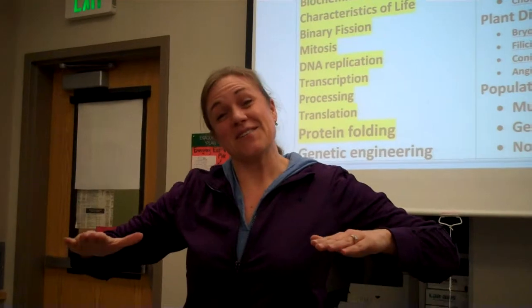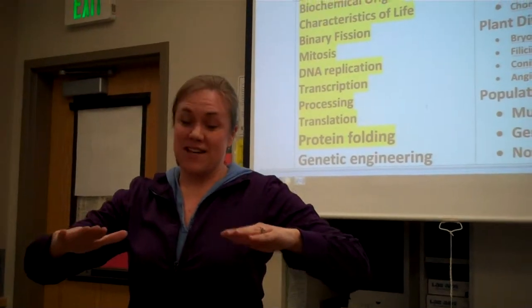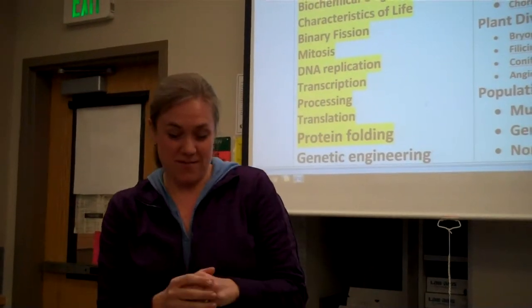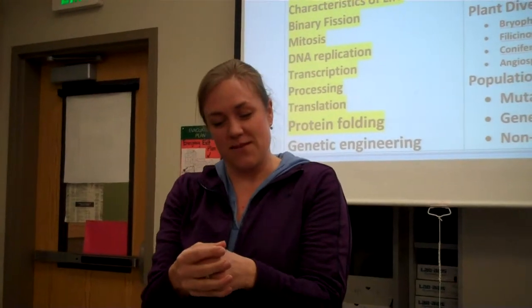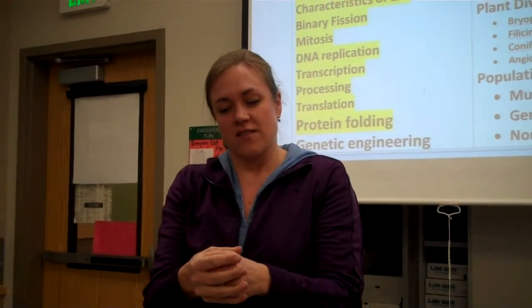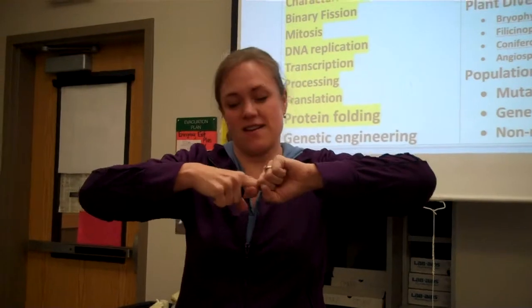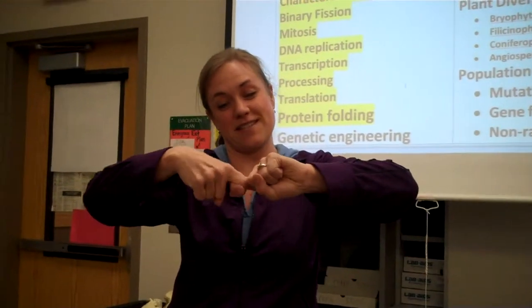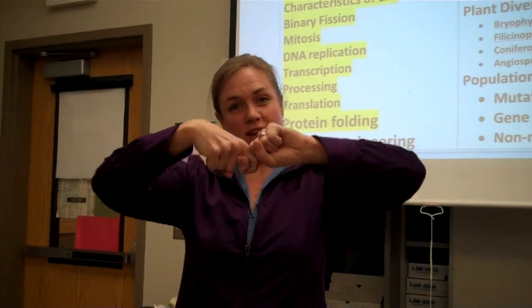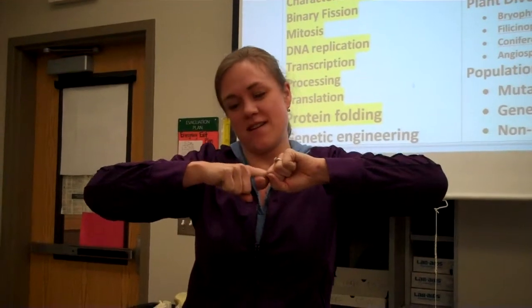Then you get into tertiary structure, which has four types of interactions amongst R groups of the amino acid. The strongest is a covalent bond between disulfide, called a disulfide bridge, between the cysteine amino acids. It's a four count: one, two, three, four, because that's a strong bond.